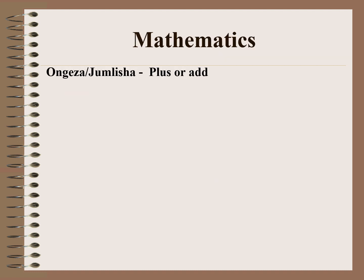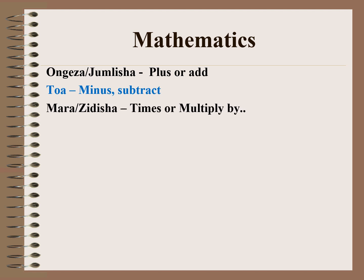In mathematics: ongeza or jumlisha means plus or add. When you are calculating, you can say ongeza or jumlisha, meaning you plus or add a number. When you want to say minus or subtract, it is toa or kutoa. Mara or zidisha means times or multiply by. Gawanya or gawa kwa means divide by.